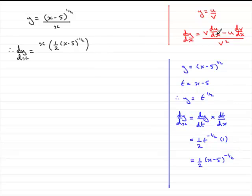Then we've got the minus here. And now it is the top of the fraction. So the top of the fraction is x minus 5 to the power half, being multiplied by the differential of the bottom of the fraction. But if you differentiate x with respect to x, you get 1. And then this is all divided by the denominator squared. So that's x squared.